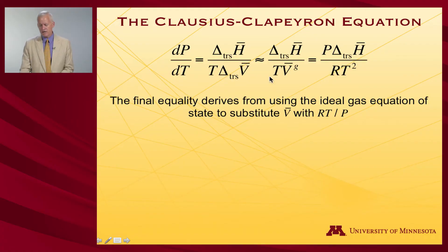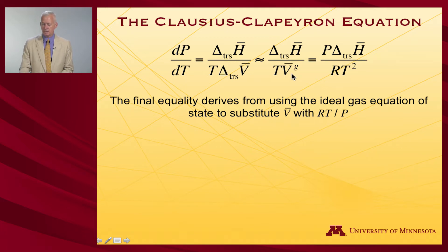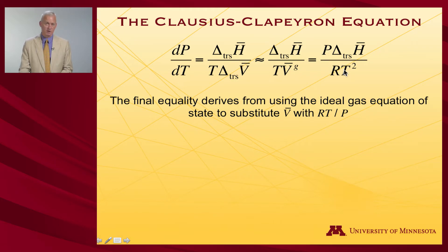So if we make that approximation in the Clapeyron equation and replace ΔV with just the volume of the gas, and then take advantage of the ideal gas equation of state to replace the molar volume of the gas with RT over P — and since it's in the denominator, that'll give us a P over RT in this equation.